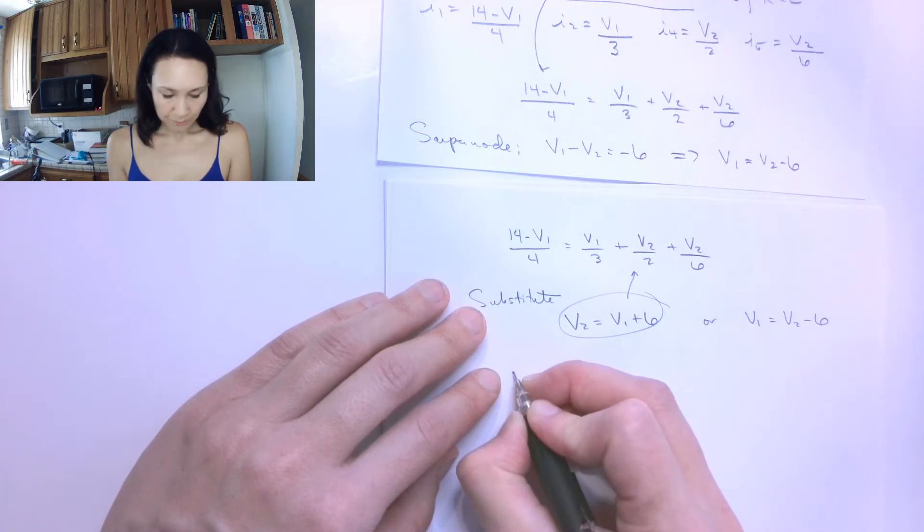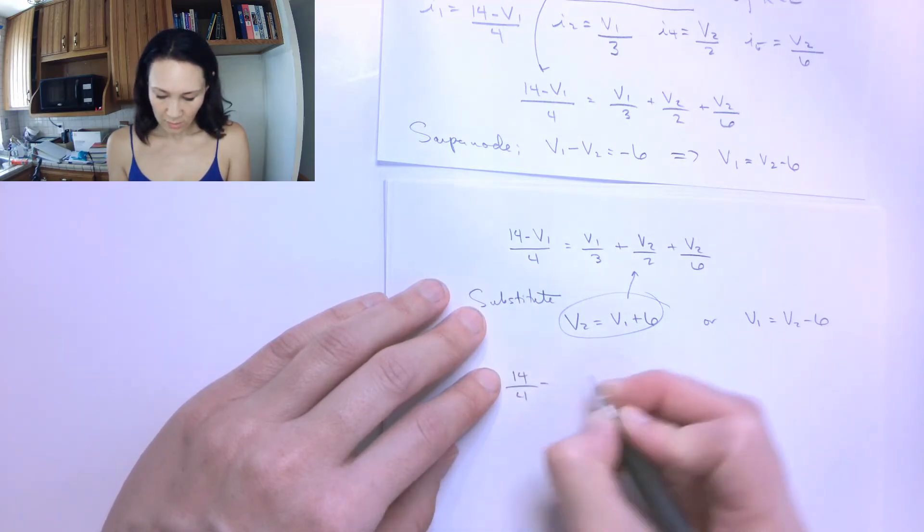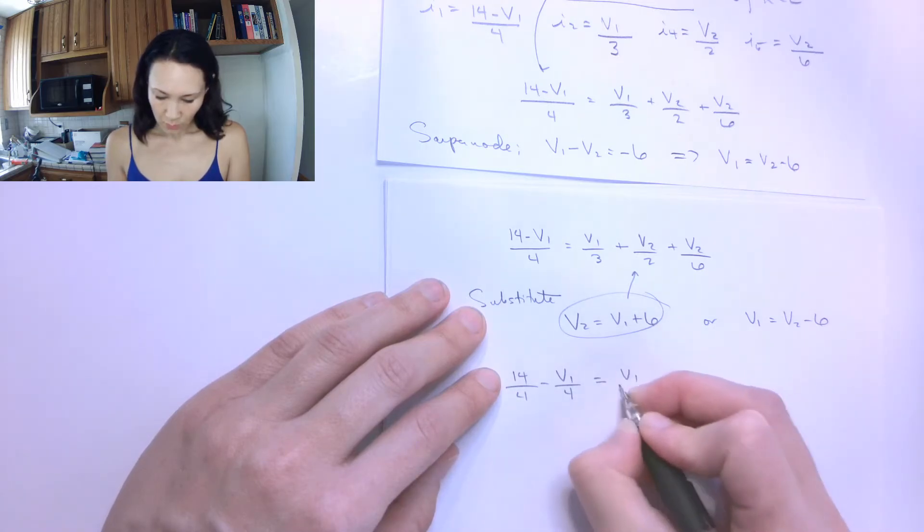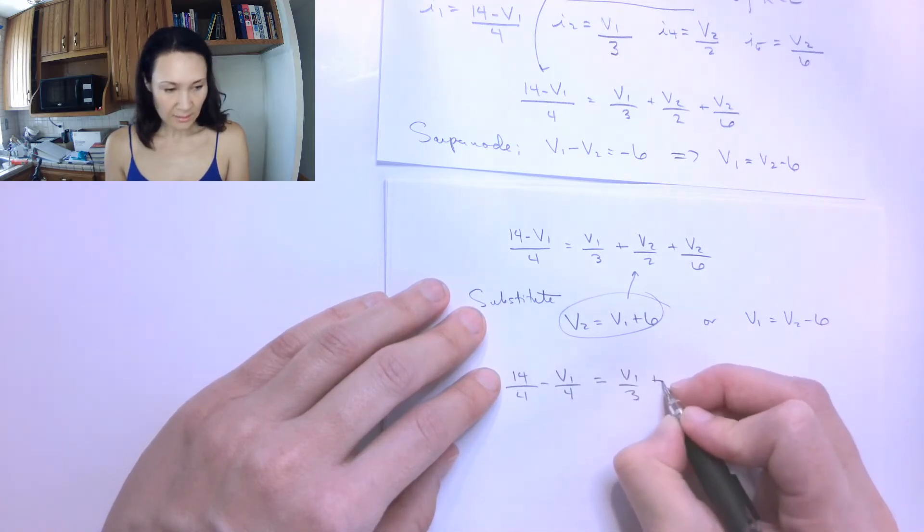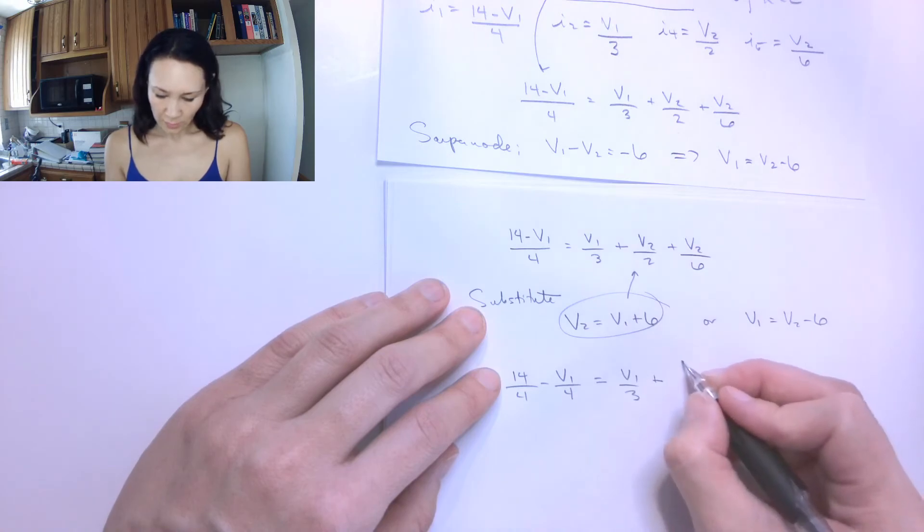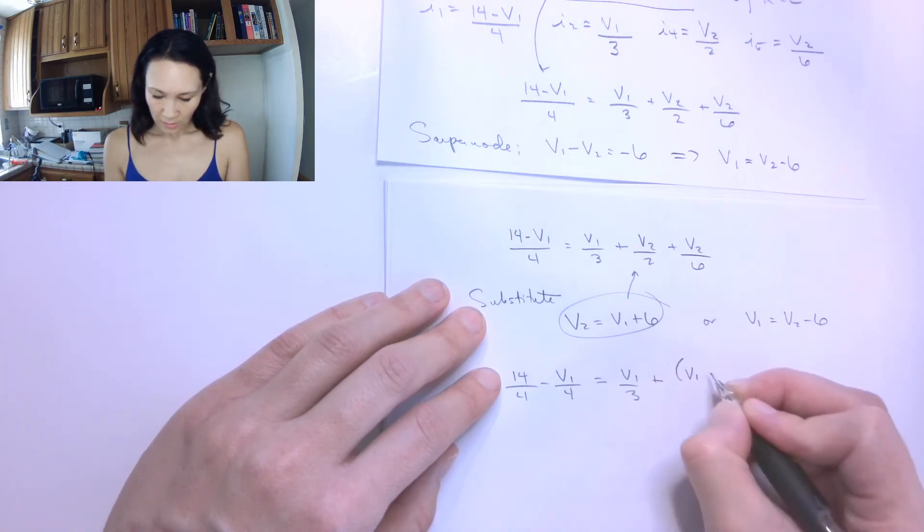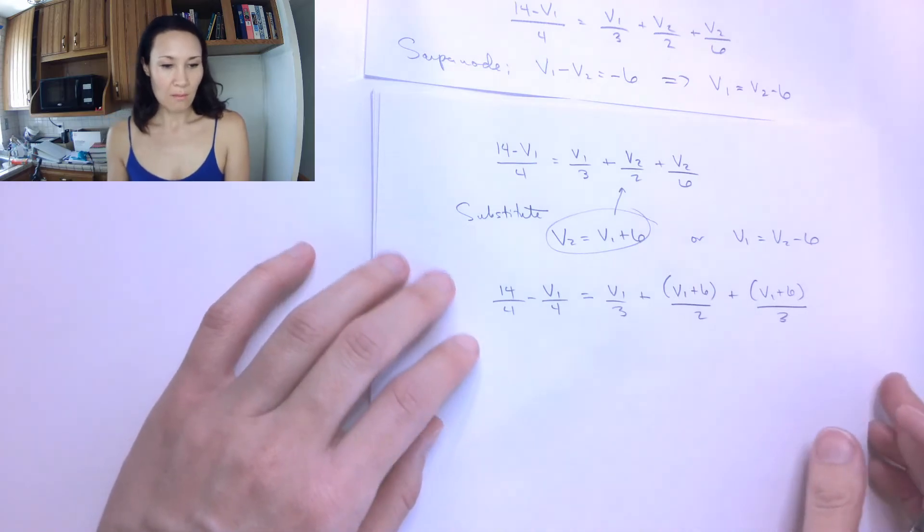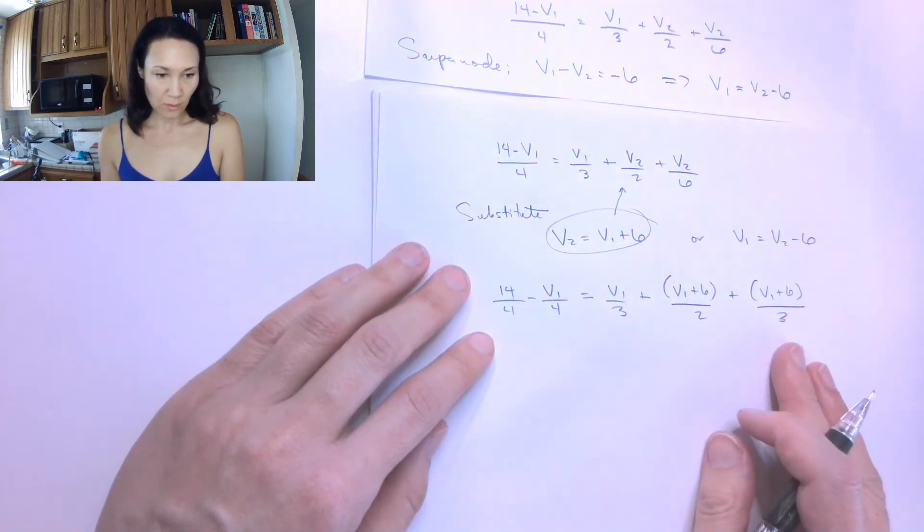So here I get that 14 over 4 minus V1 over 4 is equal to V1 over 3 plus, in place for V2, I'm going to put V1 plus 6 over 2 plus V1 plus 6 over 6. And now I get to solve this thing for V1.